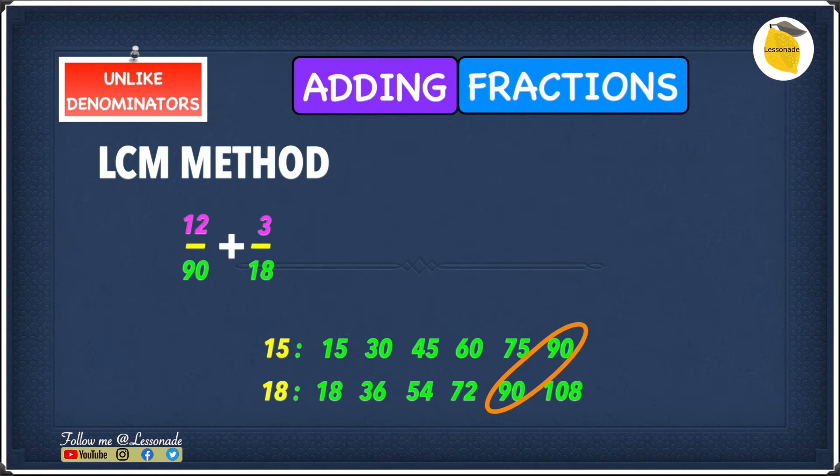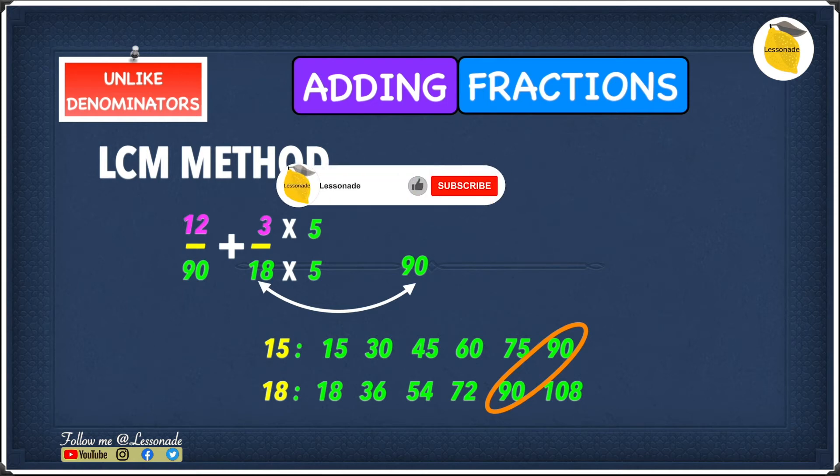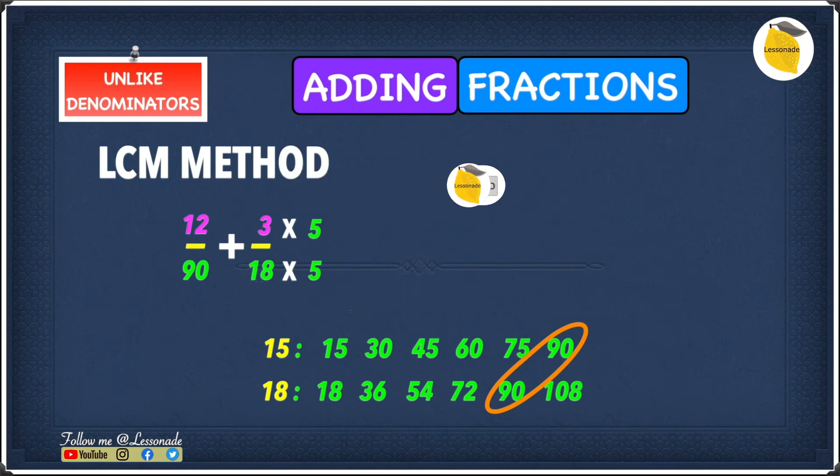Now we have 12 over 90 plus 3 over 18. We have to do the same thing for 18 as well. Which number do we have to multiply to 18 to give us 90? That number is 5 because 18 times 5 gives you 90. This means we have to times 18 by 5 and 3 by 5 because whatever you do to the bottom number you have to do to the top number. We know that 3 times 5 is 15 and 18 times 5 is 90, which means we get 15 over 90.